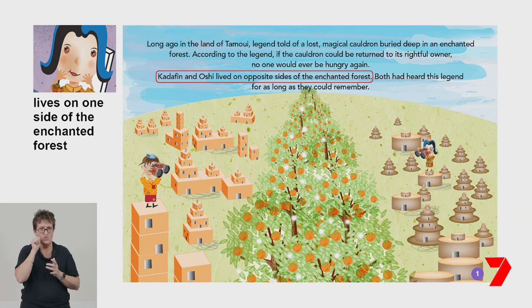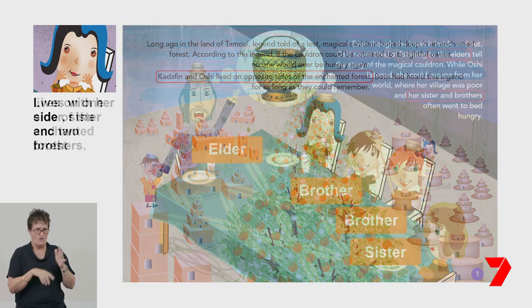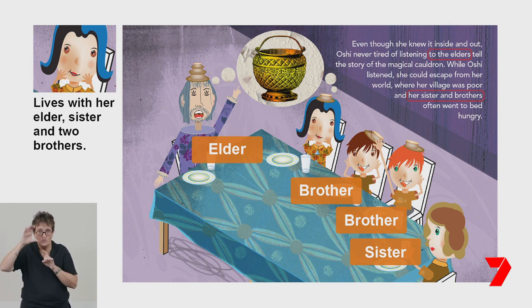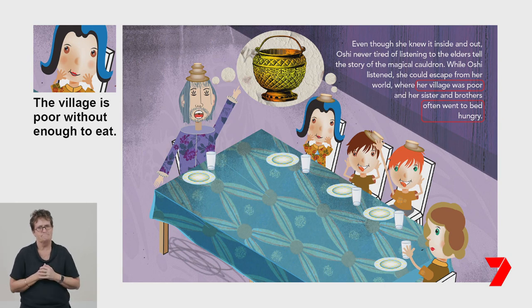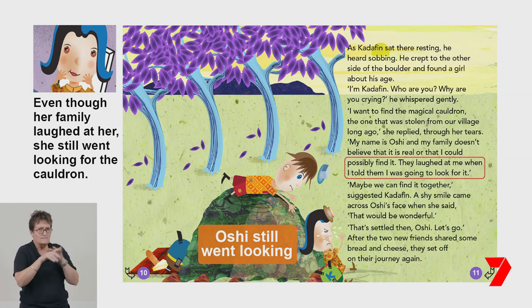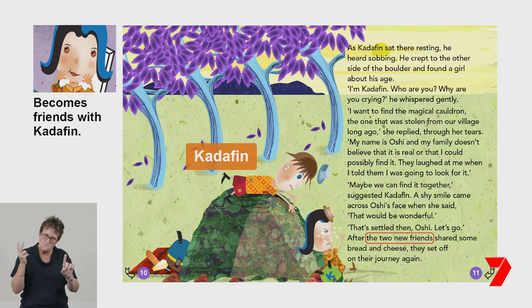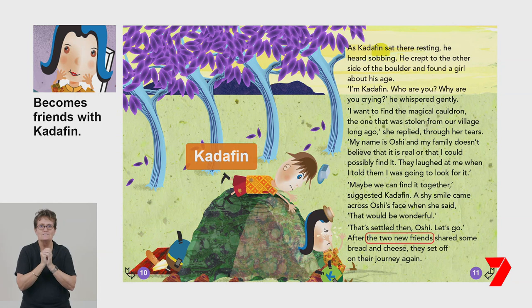What else can we discover about Oshii? We know from the text that she lives on one side of the Enchanted Forest — 'Kadhafin and Oshii lived on opposite sides of the Enchanted Forest.' We know from the image and text that she lives with her elder, her sister, and two brothers. The text tells us the village Oshii lives in is poor and they often don't have enough to eat — 'they often went to bed hungry.' Even though her family laughed at her, Oshii still went looking for the cauldron. And when she meets Kadhafin, they become friends — you can tell from the noun group 'the two new friends' and from the picture of Kadhafin comforting Oshii.